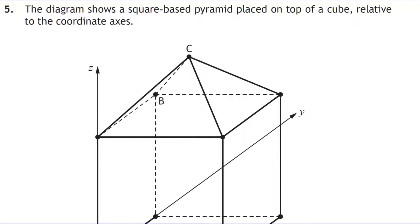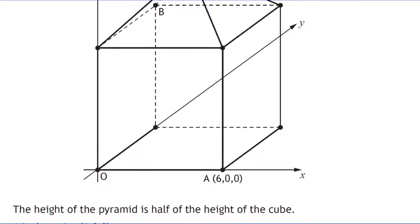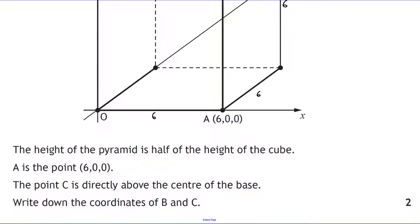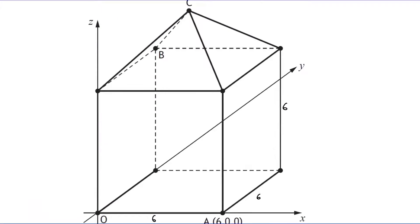A vectors question or 3D coordinates. We've got a square base pyramid placed on top of a cube. We're told that coordinate is 6, 0, 0. So if there's a cube on bottom, then this means this is 6 by 6 by 6. I'll just add that into the diagram. Point C is directly above the center. Write down the coordinates of B and C.